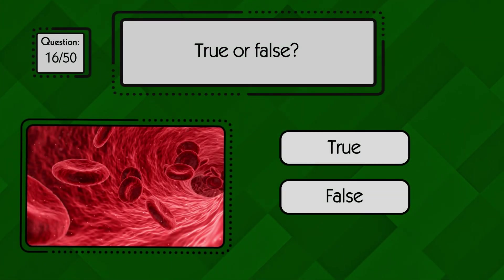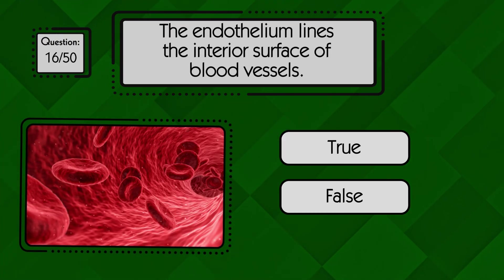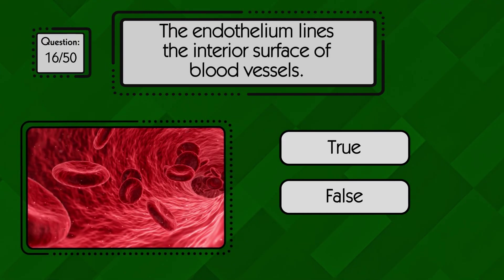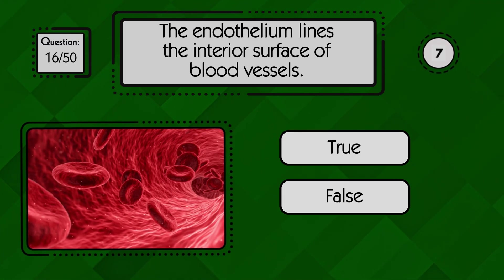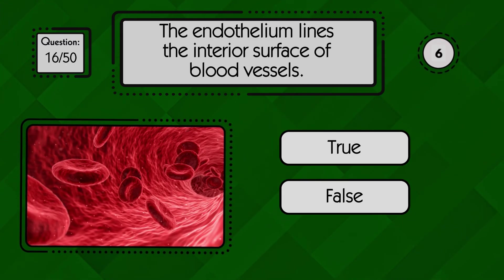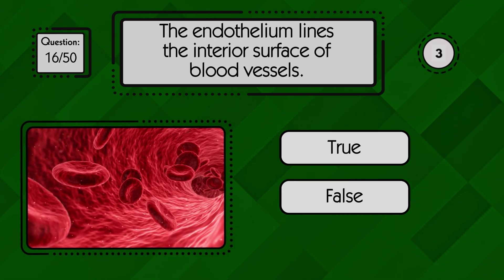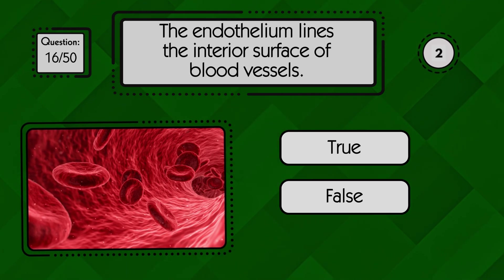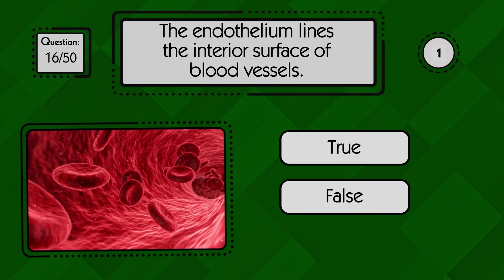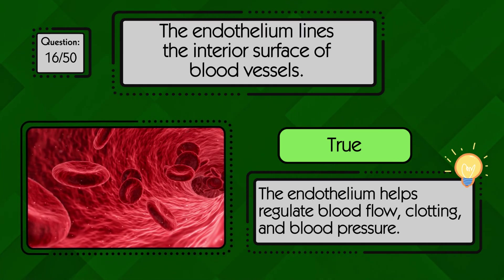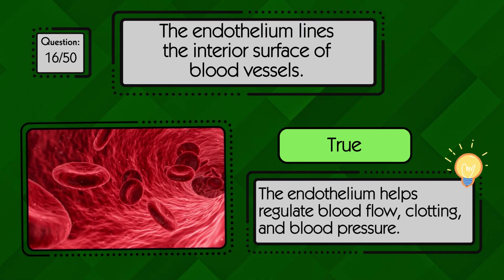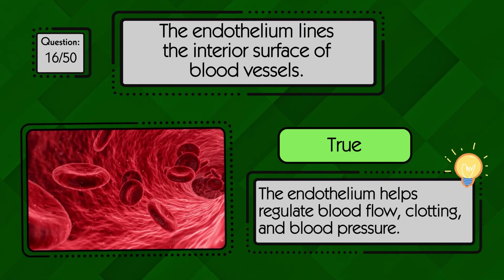True or false: the endothelium lines the interior surface of blood vessels. True — the endothelium forms the thin inner lining of all blood vessels and helps maintain smooth blood flow.